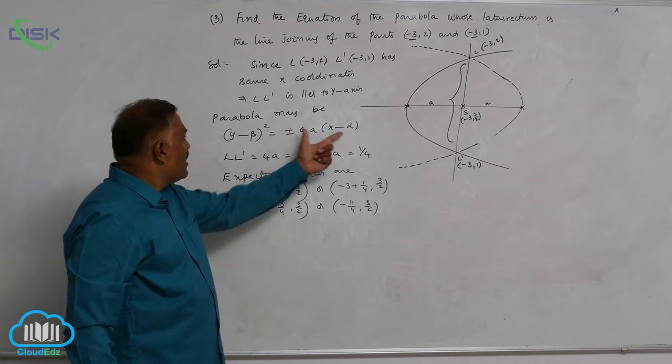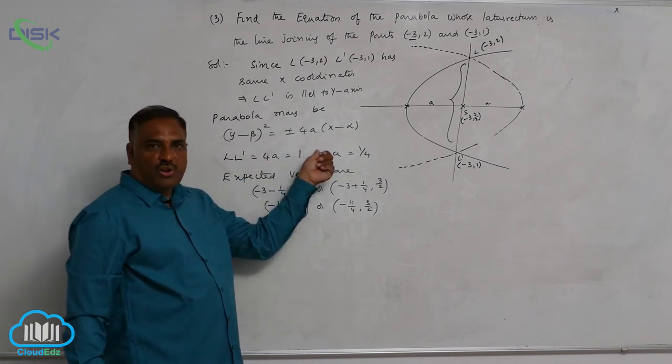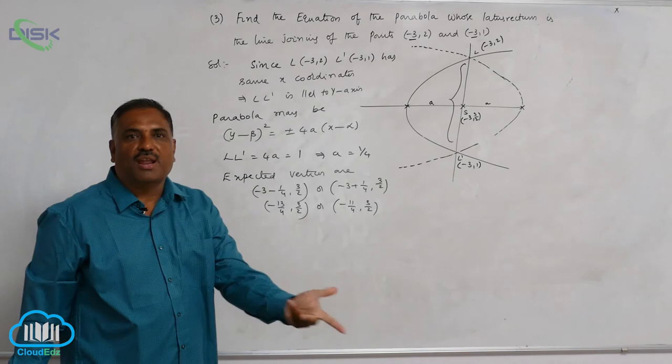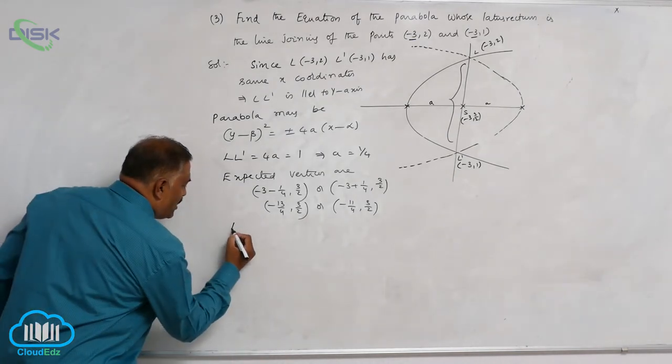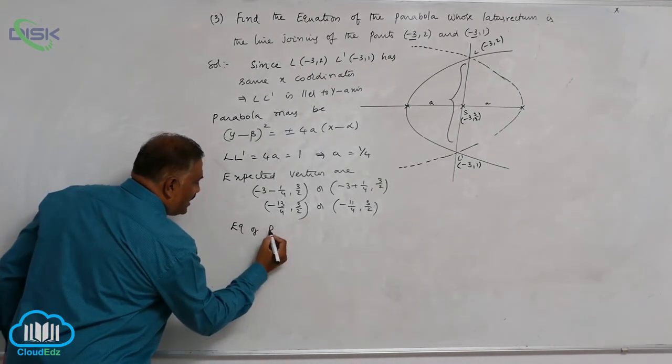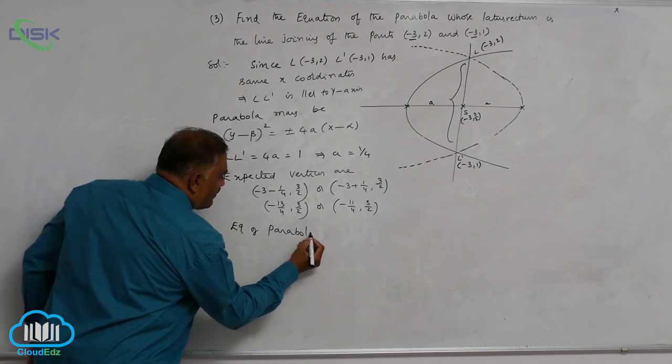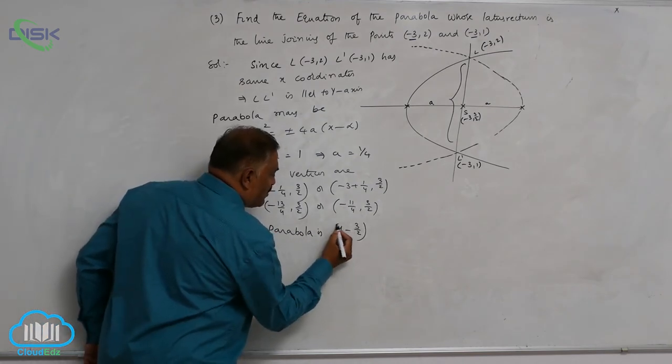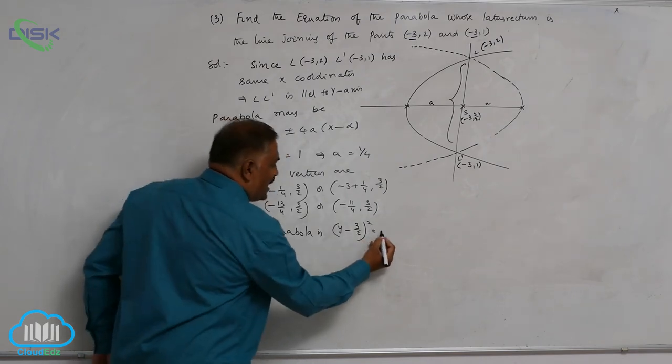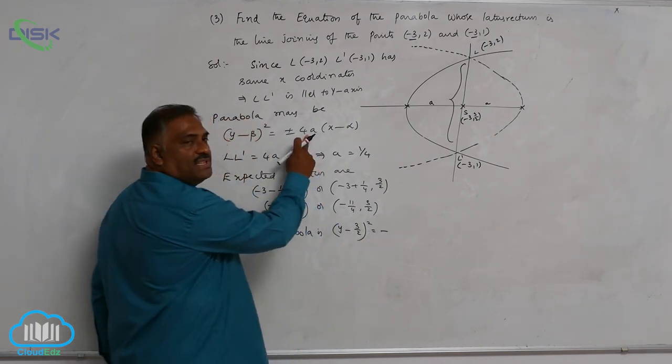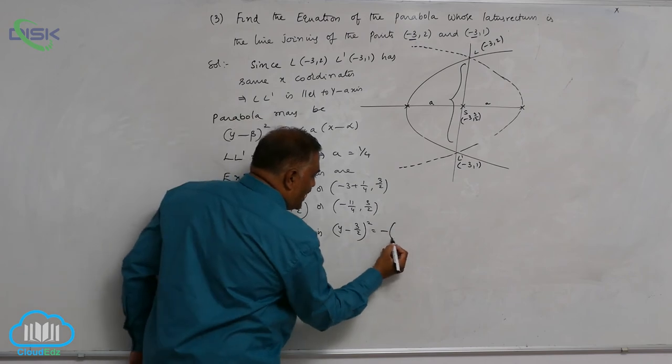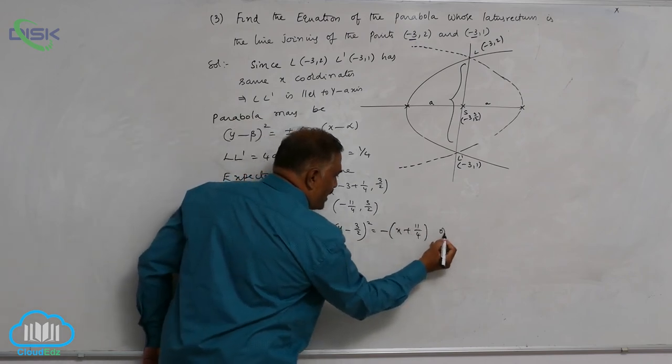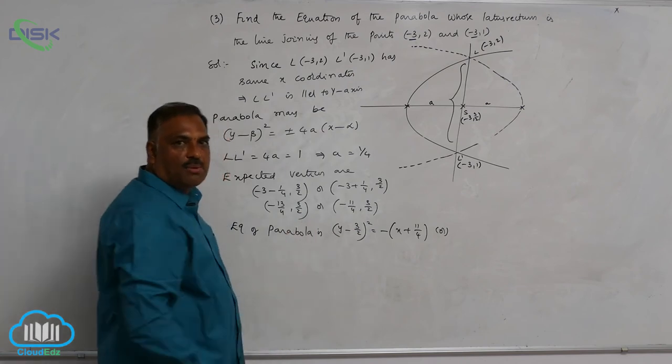Now we know the (α, β) value and the 4a value, so straight away you can write the parabola equation. So equation of parabola is given by (y - 3/2)² = -1(x + 11/4), or this is a left-hand parabola.